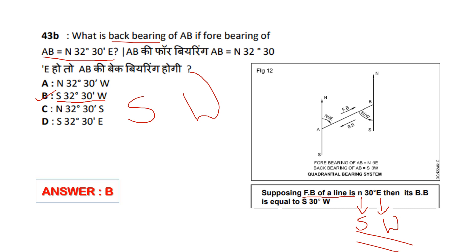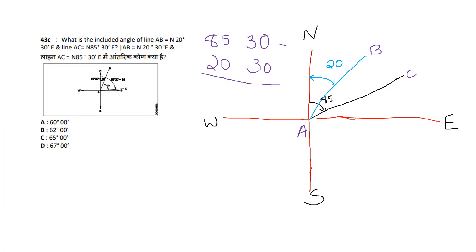The answer is option B. Next question: what is the included angle of line AB, given AB equals N 20°30' E and AC equals N 85°30' E? AB line is in the north-east quarter — the first quarter — at 20 degrees 30 minutes. AC is also in the north-east quarter at 85 degrees 30 minutes east.